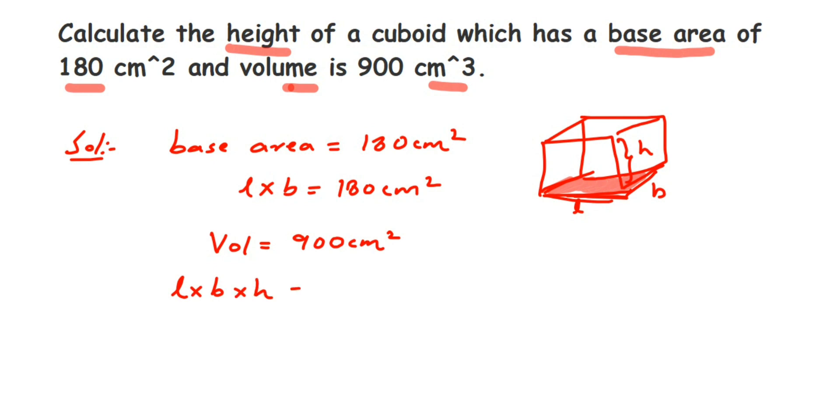Here I'm not adding the units here. Now I'm going to substitute in place of length into breadth. I'm going to put 180, so l × b × h becomes 180 multiplied by height is equal to 900.